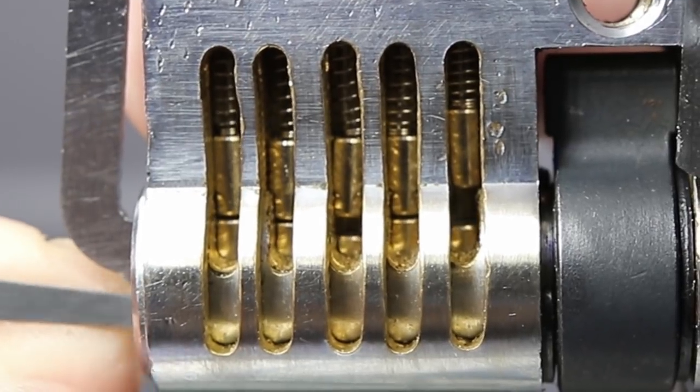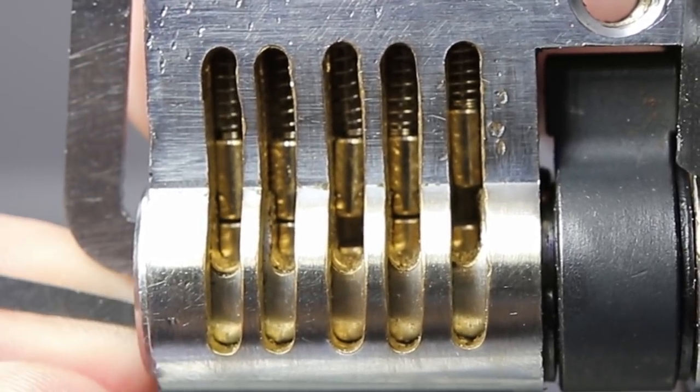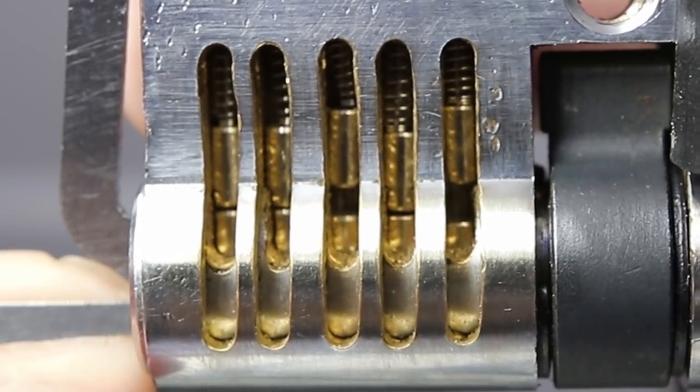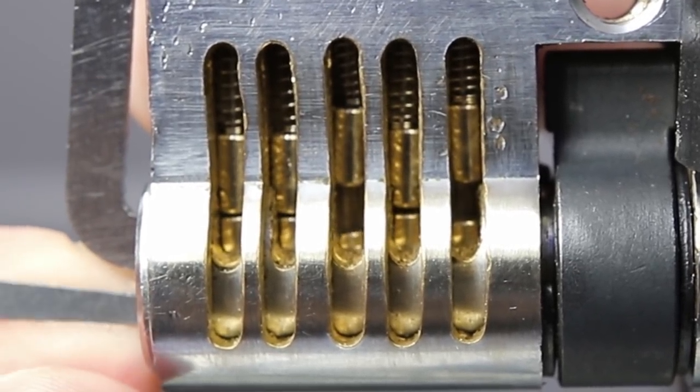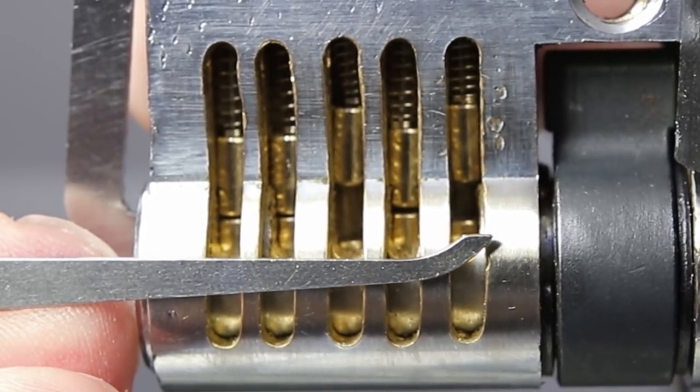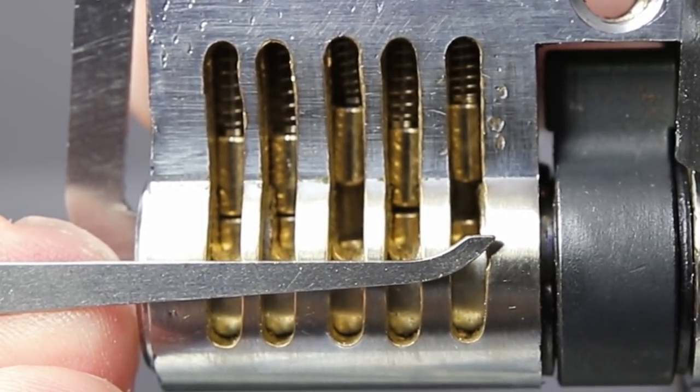Got a nice click. That feels set. One, two, three. Binding up. That got a nice click. That feels set. Now I'm just having a really hard time finding the next binding pin. I really wish that there was a better way to find the next binding pin.